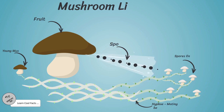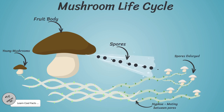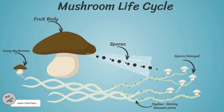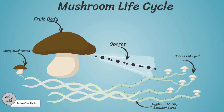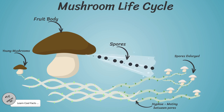Mushroom life cycle. Mushrooms' life cycle involves four steps. Step 1: the fruit body of the mushroom produces spores. Step 2: the spores spread through the air and germinate. Step 3: these spores germinate and generate a long string of cells called hyphae. Hyphae are the reproductive structure for mushrooms.